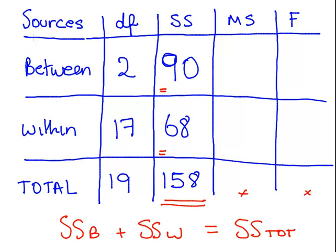Now what we have to do is calculate the mean squares. And we're almost home. And the mean squares are equal to the sums of square values divided by degrees of freedom. So this is 90 divided by 2. And this is 68 divided by 17. So that is equal to 45. And that's going to be equal to 4.